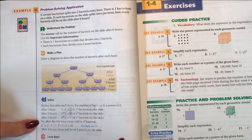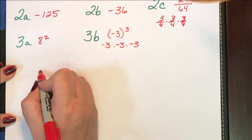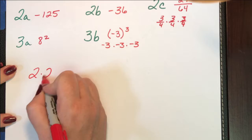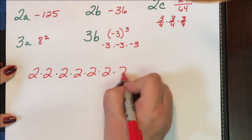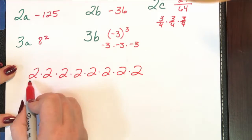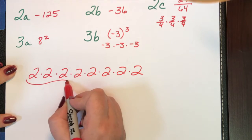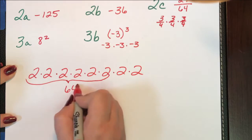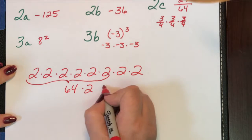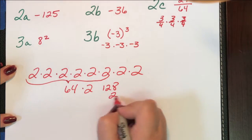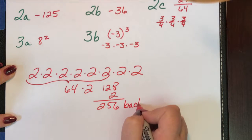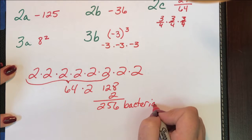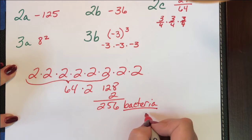And the question under check it out takes this even further. So pause the video here and do number 4 on check it out. So after 8 hours, that would be 2 to the 8th power. We've already determined that 2 to the 6th power is 64 times 2 is 128 times 2 is 256 bacteria. Please remember that word problems need word answers.